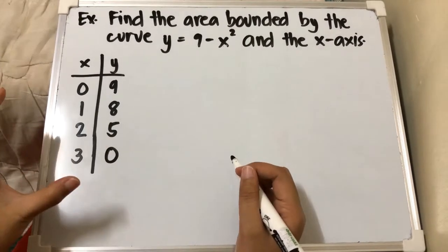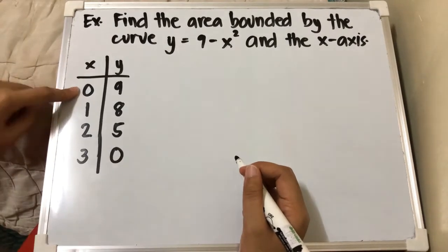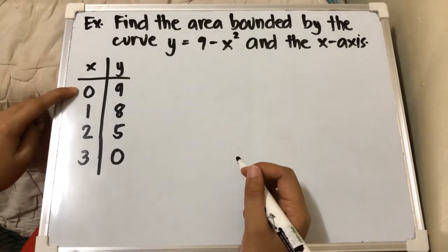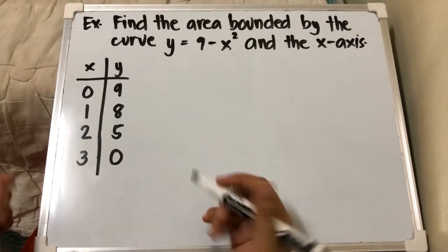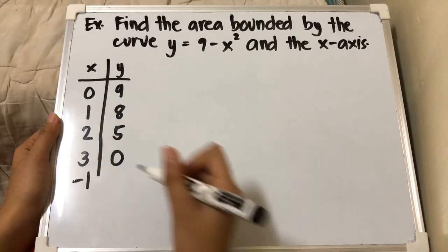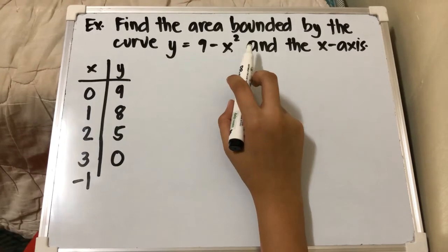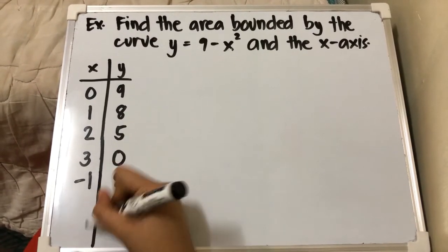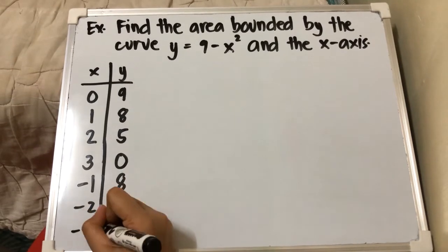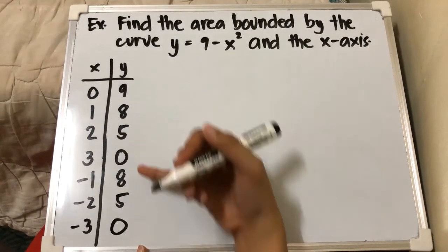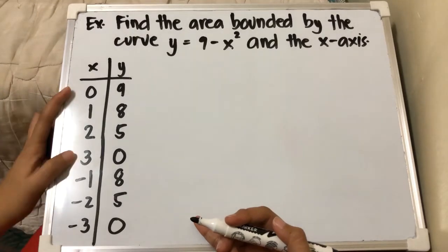The time to stop substituting values is when you see a common value between x and y — in this case, we can already see 0 from both x and y. If we substitute negative values: for x equals negative 1, we still get 8; for negative 2, we get 5; and for negative 3, we get 0. So as you can see, our graph is symmetric.